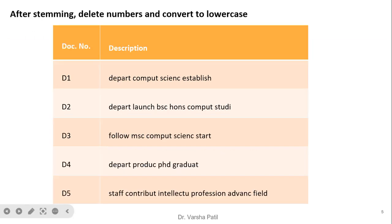Now we require to remove these. In the next step we are removing the stop words, punctuation marks, and numbers, and also going for the stemming operation. After stemming and all other pre-processing, this is our final document form. For example, 'department' is converted to 'depart', 'computer' is converted to 'compute'. In this way we apply the standard stemming algorithm to get the basic morpheme of the word.